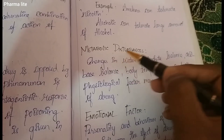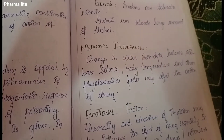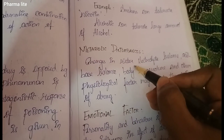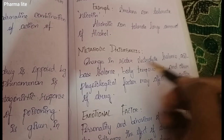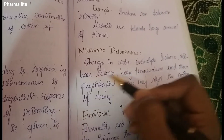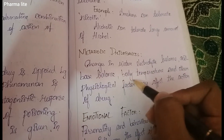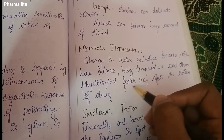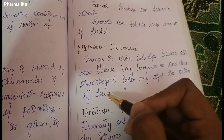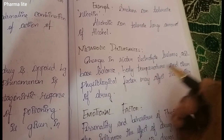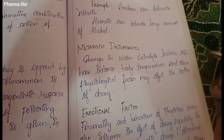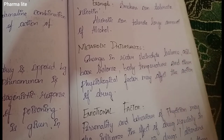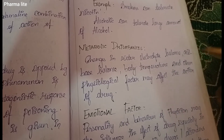Metabolic Disturbances. If the body's metabolic balance is disrupted — for example, water-electrolyte balance, acid-base balance, body temperature, or other physiological factors — these may affect the action of a drug. Usually acid-base balance is important; when it is altered, drug action can change significantly.